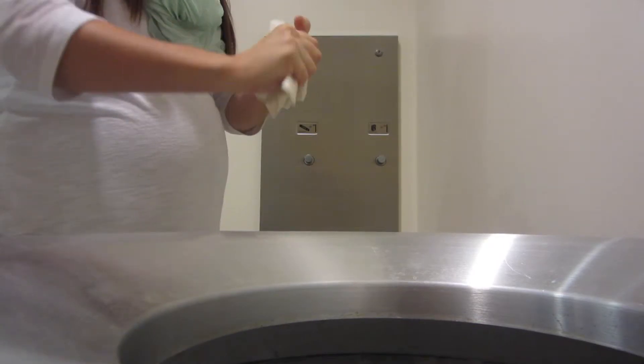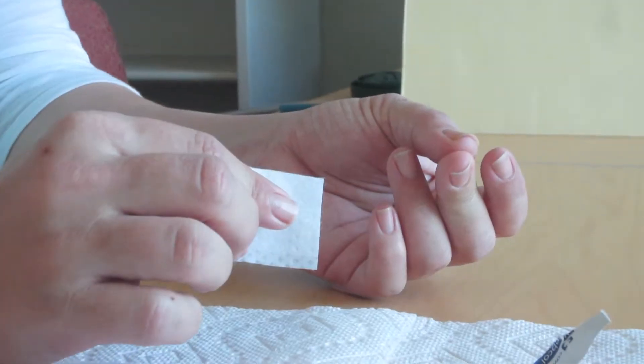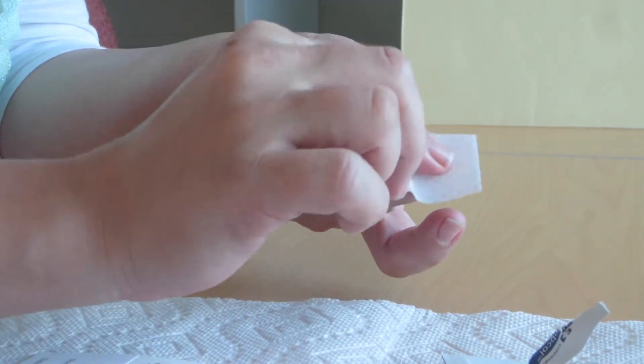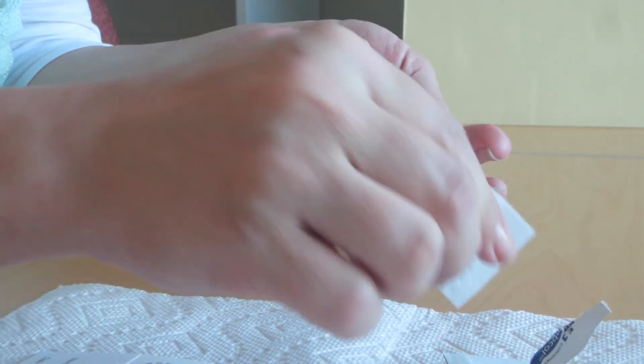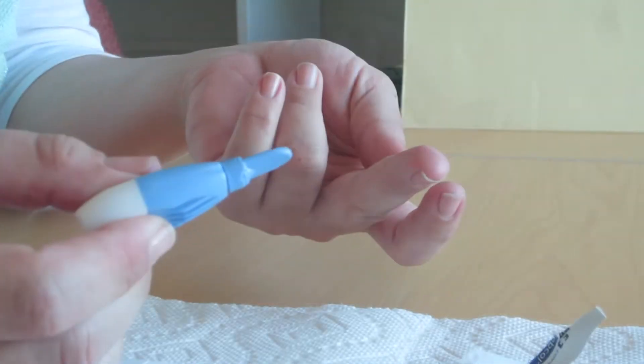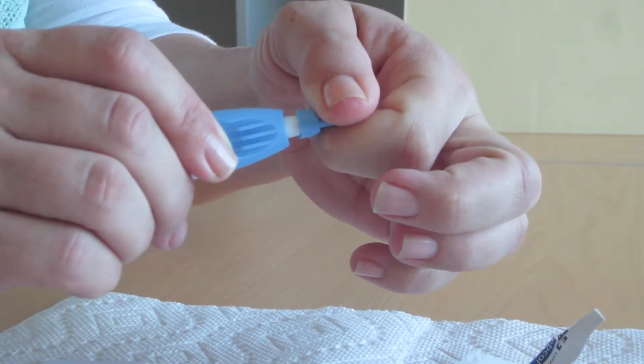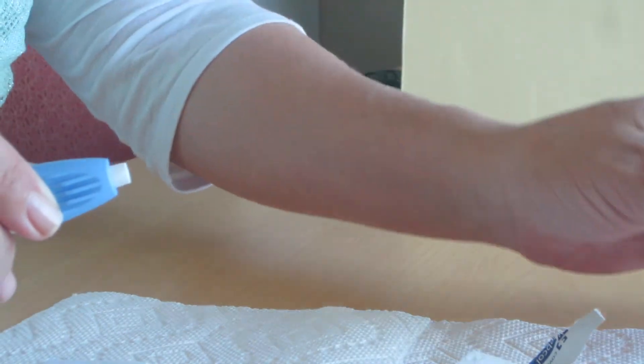Now, to begin the collection of your sample, wipe the inner fleshy side of your middle or ring finger of your non-dominant hand with the alcohol pad. Pick up the lancet and remove the cap by twisting the cap one full turn and pull until the cap comes off.